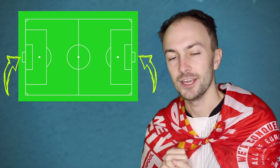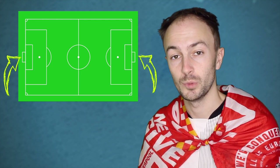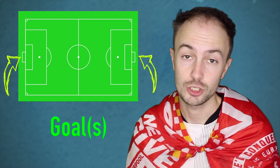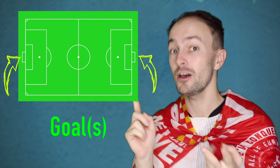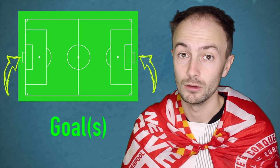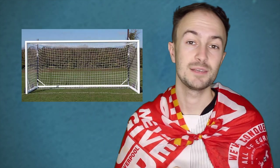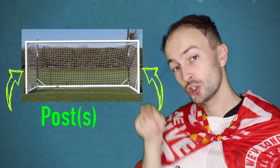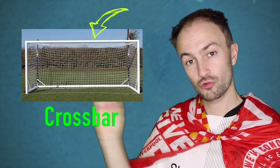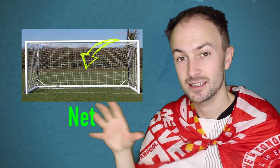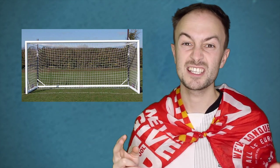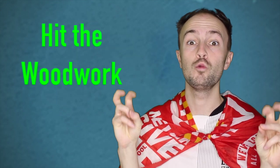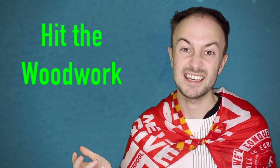Either end of the pitch we have two very important things in football and they're called the goals. We have two goals in a game of football. The goal is made out of four things: we have two posts, a crossbar, and we have a net. If a player was to hit either the crossbar or the posts, we would say they've hit the woodwork, because usually in the olden days the posts and the crossbar would be made out of wood.